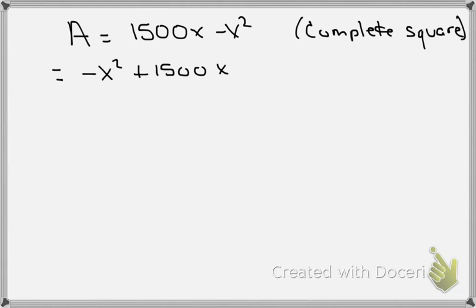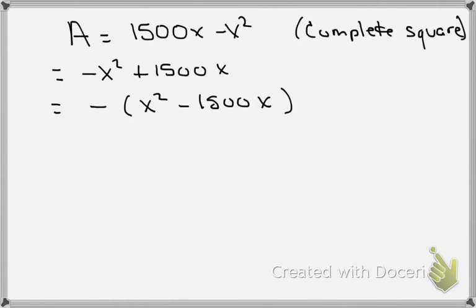Now we need to find x by completing the square to find the vertex. The area equals negative x squared plus 1,500x. Before completing the square, I like to make sure the coefficient on the x squared term is 1. To do that, I'll factor out a negative 1, giving us negative 1 times the quantity x squared minus 1,500x. Now the coefficient of x squared inside is just 1, making the completing-the-square formula straightforward.